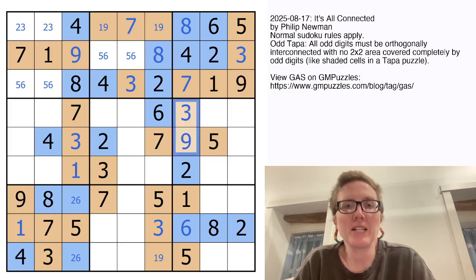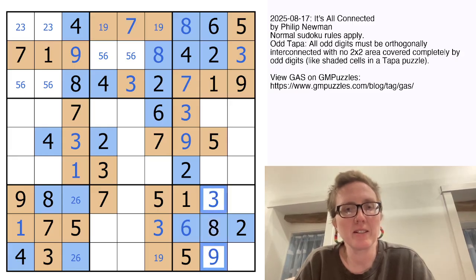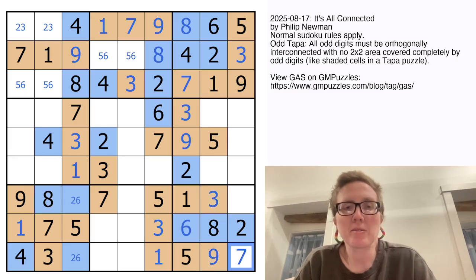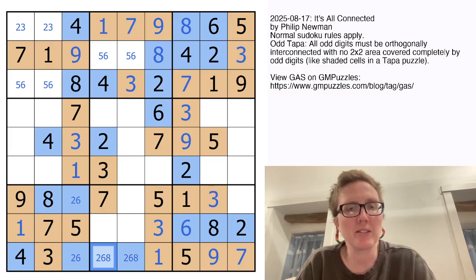So now we have three and nine here, three and nine in this region that have to go there and there. And that makes this a one and makes this a nine. And now seven can only go there because there's already a seven in row seven. So now we have all of our odd digits in row nine. So these are going to be two, six, and eight. Those are all even.